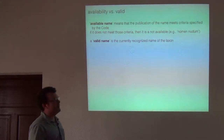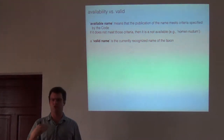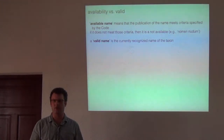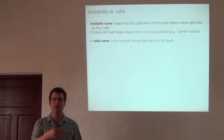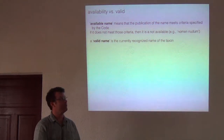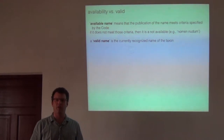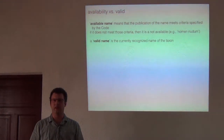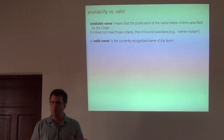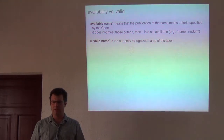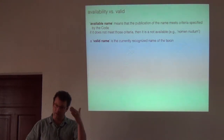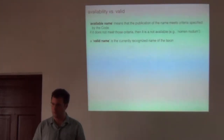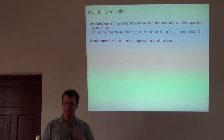Availability and validity are two different things. The valid name is the name we use right now — when we're identifying frogs or birds or plants, the scientific names we use are the valid, currently recognized names for that taxon. Availability simply means that the name meets all of the criteria to be a scientific name as of the time of publication. The most common examples of available but not valid names are junior synonyms — a real name, but not the valid one because it was published later and recognized as the same thing.